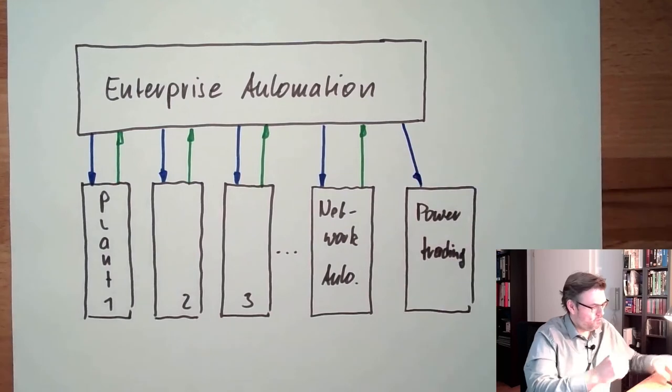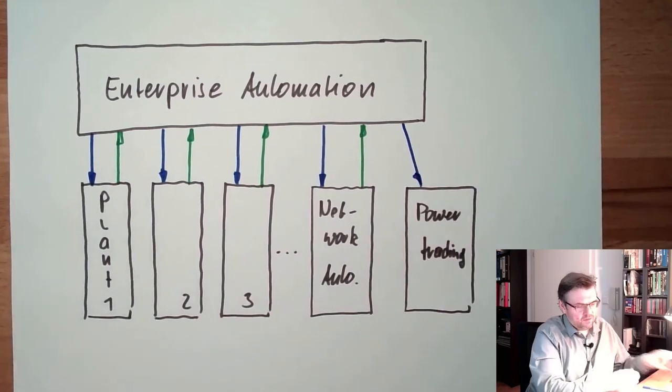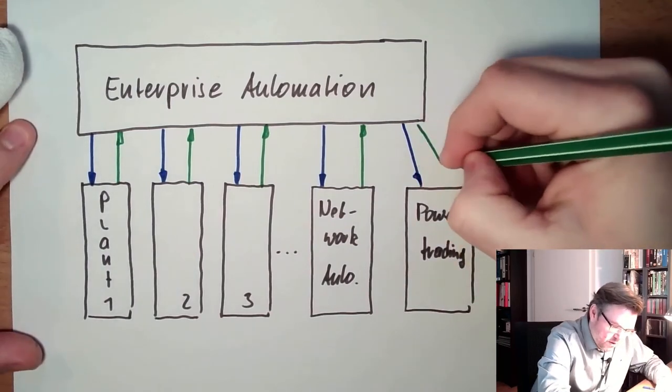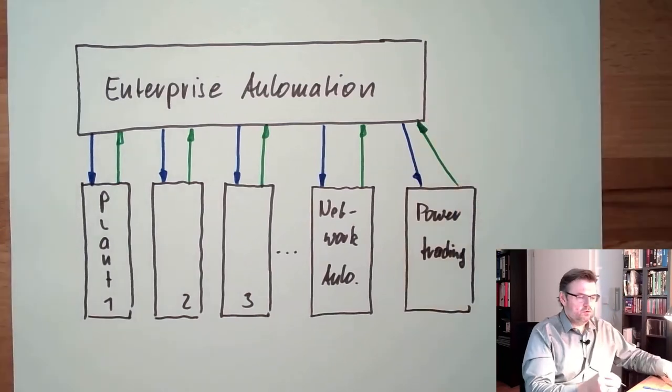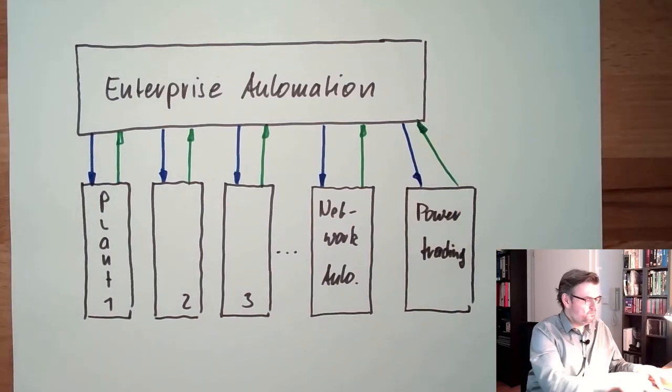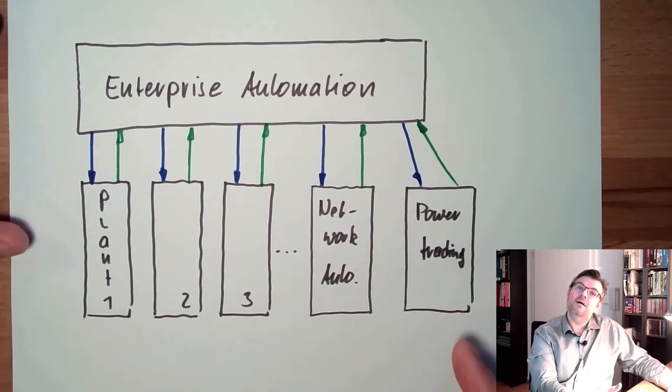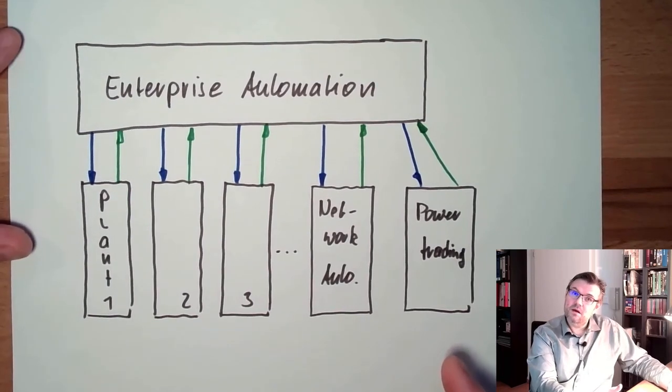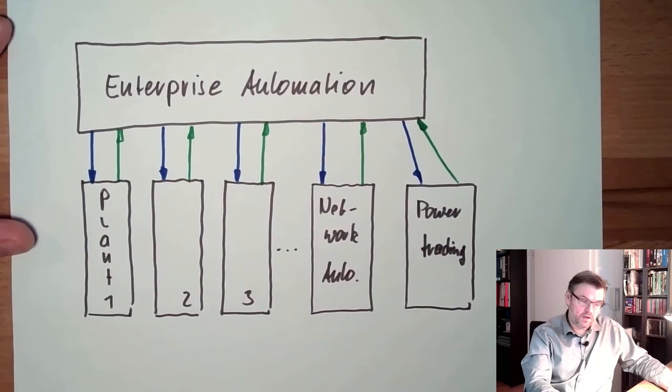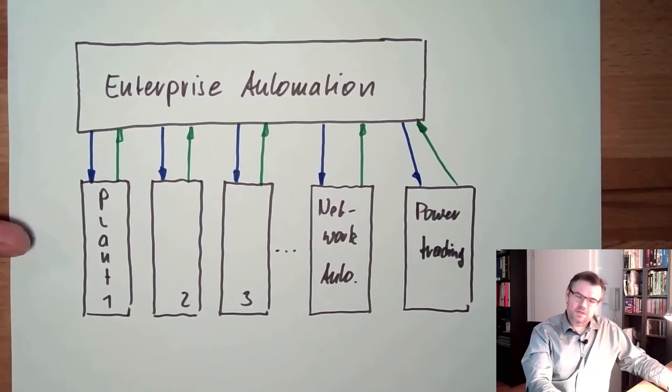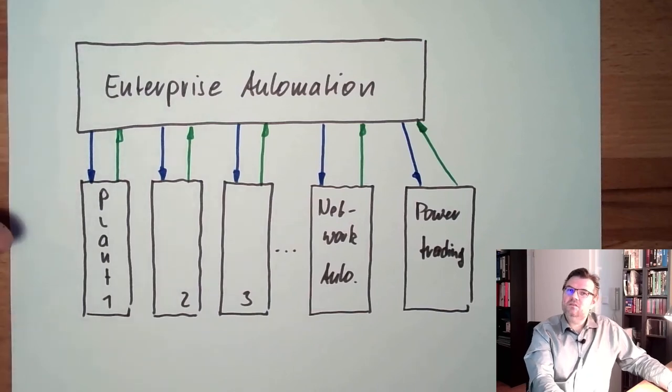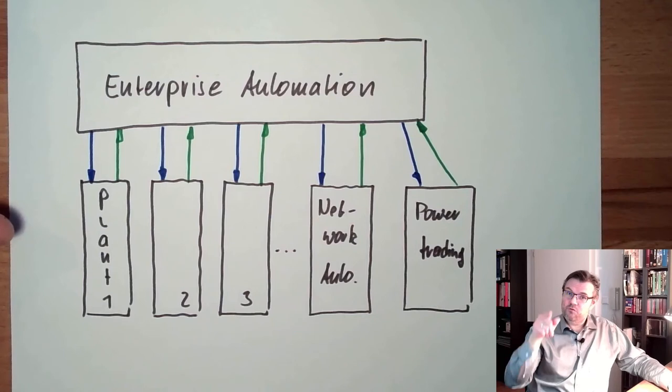This is the right position to have an interface to the power trading because if I can produce something and nobody's buying this, it will be cheap. There is even the situation which of course every supplier wants to prevent is that I'm producing power and have to pay for this.